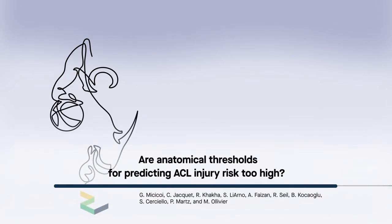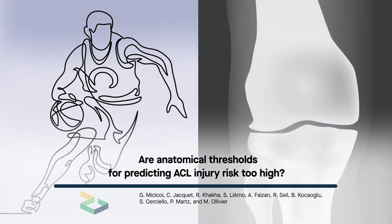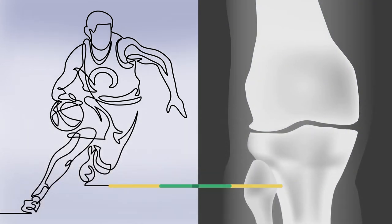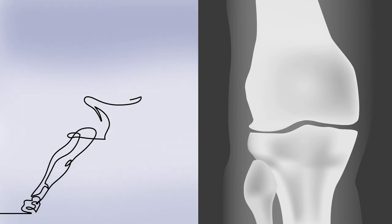ACL injuries can occur in numerous ways. While it isn't possible to predict when they happen, certain anatomical features are known to put some people at higher risk than others. But are the thresholds for these so-called bony risk factors too high?